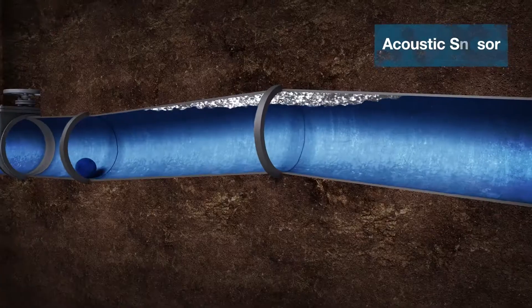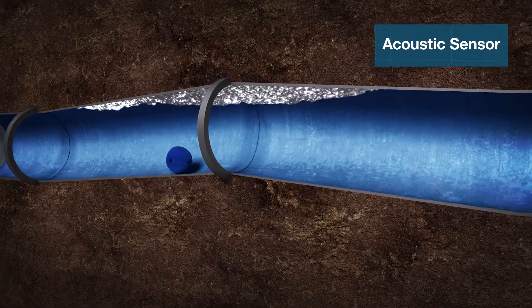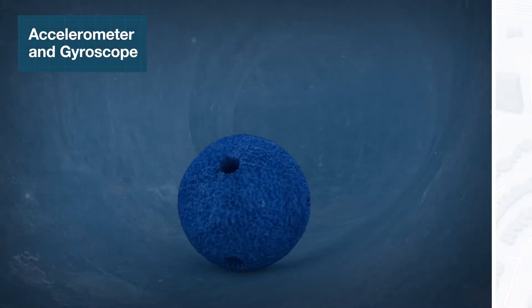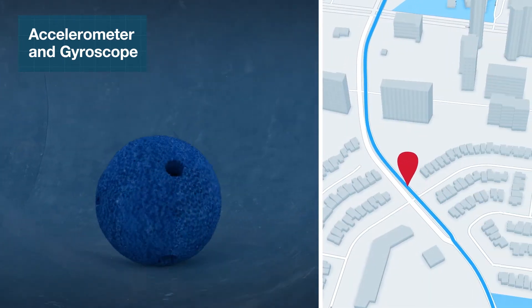A lot of what the SmartBall is doing is it's collecting data, so we've got an acoustic sensor that's listening for leaks and gas pockets. We've got an accelerometer and a gyroscope that's measuring movement of the ball that we can later use for pipeline mapping.